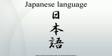Verbs are conjugated to show tenses, of which there are two: past and present (or non-past), which is used for the present and the future. For verbs that represent an ongoing process, the -te iru form indicates a continuous or progressive aspect, similar to the suffix -ing in English. For others that represent a change of state, the -te iru form indicates a perfect aspect. For example, kite iru means 'he has come and is still here', but tabete iru means 'he is eating'. Questions have the same structure as affirmative sentences but with intonation rising at the end. In the formal register, the question particle ka is added.